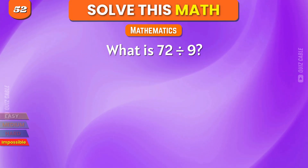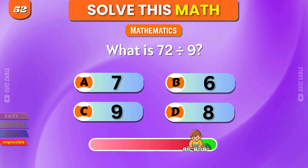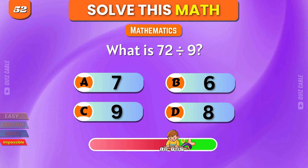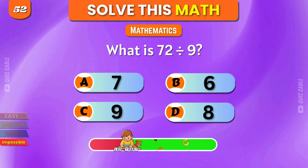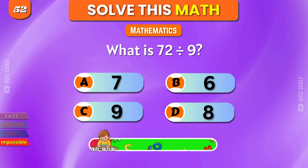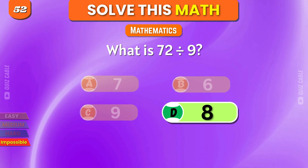What is 72 divided by 9? 7, 6, 9, 8. Correct, 8.